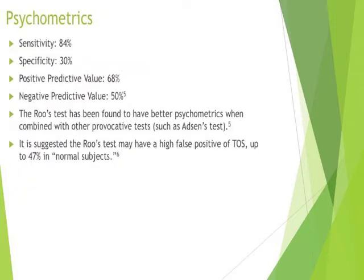Psychometrics. According to Gillard et al. in 2000, the following psychometrics for the Ruse Test were found: sensitivity 84%, specificity 30%, a positive predictive value of 68%, and a negative predictive value of 50%. Gillard in 2000 found the Ruse Test had better psychometrics when combined with other provocative tests, such as the Adson's Test. It is suggested by Nord et al. in 2008 that the Ruse Test may have a high false positive rate — up to 47% in normal subjects.